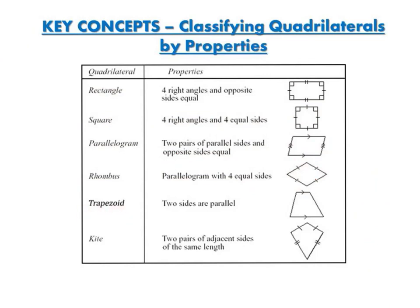A trapezoid has only two sides that are parallel. It has four sides, but only two sides that are parallel, and they're not necessarily the same length. The other two sides are not necessarily the same length either. So as long as you have two sides that are parallel and four sides total, it is a trapezoid.